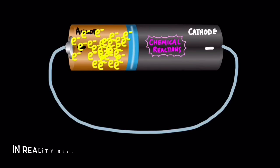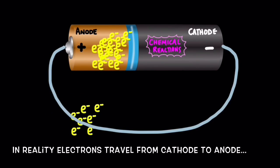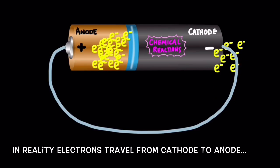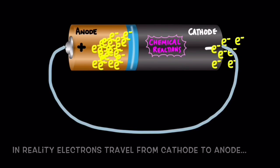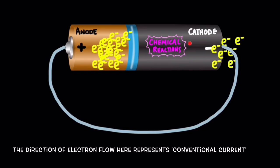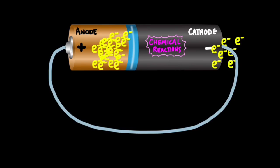They could however escape and travel to the cathode if there was a suitable pathway to do so. A conducting wire offers such a pathway, so these electrons can now space themselves out and travel to the cathode. This also explains why batteries eventually run out of power — eventually the reactants involved in these chemical reactions run out, so electrons can no longer be bunched up creating that push. So you often hear voltage referred to as a push, and now you can understand why — it's the push from these negatively charged electrons repelling each other.